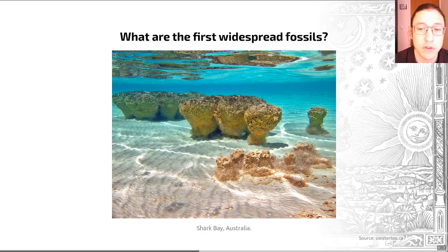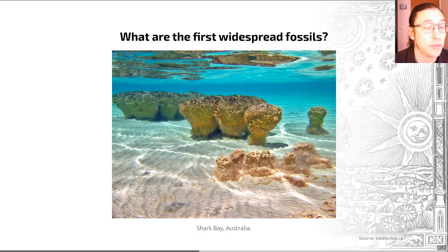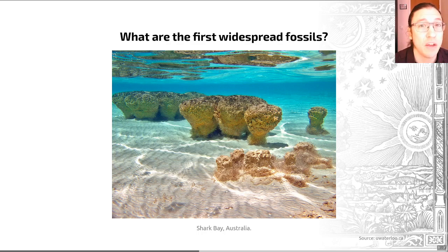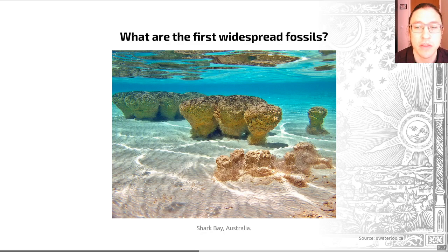That's because in modern ecosystems, where other organisms can live — such as invertebrates — stromatolites can't develop because they are eaten by other organisms. But on early Earth, there weren't these other organisms to stop their development.